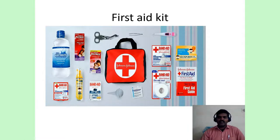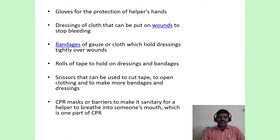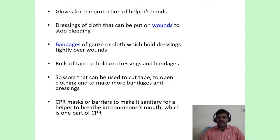What PPE should a first aid provider use? PPE means personal protective equipment, which a person should wear to prevent exposure to diseases or self-harm. Mainly gloves should be worn for protection of the hands. Dressings are cloths that can be put on wounds to stop bleeding. Band-aids or gauze cloths hold dressings tightly over wounds. Rolls of tape hold dressings and band-aids. Scissors can be used to cut tape, open clothing, and make more bandages. CPR masks — barrier or pocket masks — make it sanitary for a helper to breathe into someone's mouth during cardiac arrest when performing CPR.